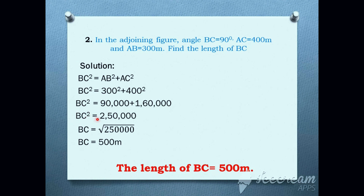BC square is equal to the sum of those two numbers, which is 2,50,000. Now we have the value of BC square, but the question asks for the length of BC, not BC square. So we shift the square to the right side and it becomes the root of 2,50,000. Root of 2,50,000 is equal to 500. Therefore, the length of BC is equal to 500 meters.